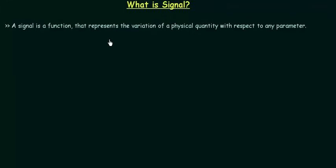Welcome to the first lecture in the digital electronics course, also called digital logic or digital logic and design in various colleges. The name of the subject is not important but the content is, and the content is going to be almost the same in all these courses. We will first see what is a signal, then what is an analog signal, a discrete time signal, and then a digital signal.